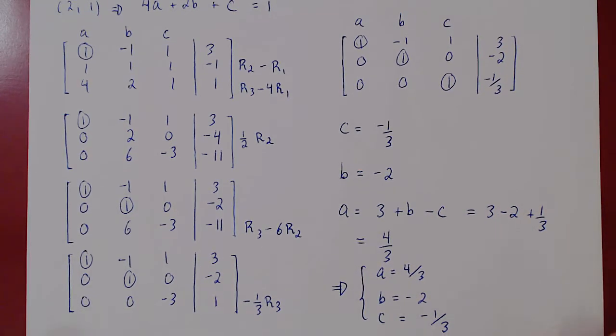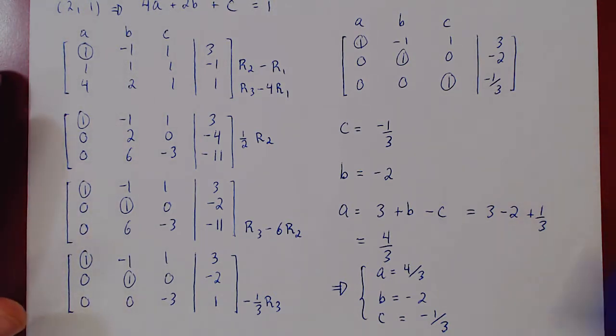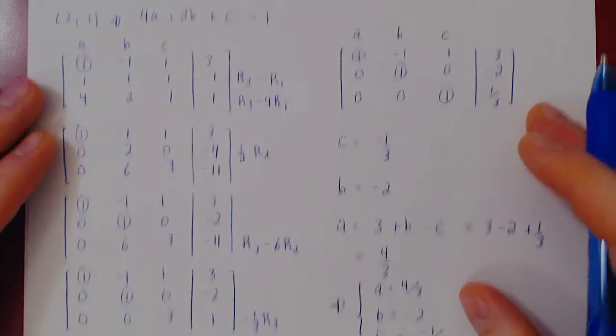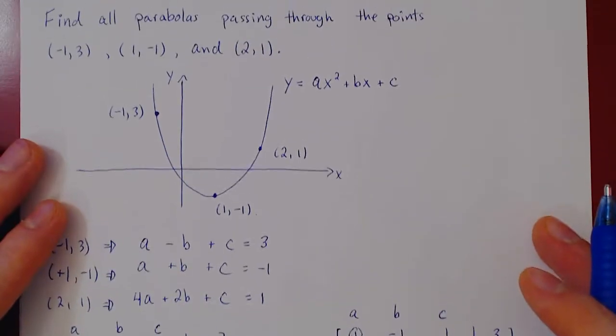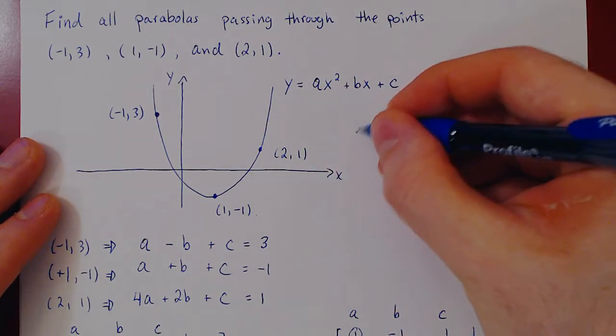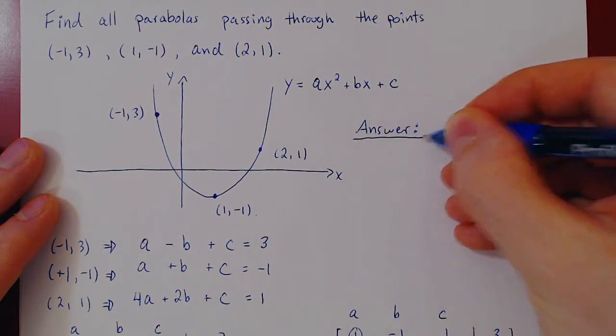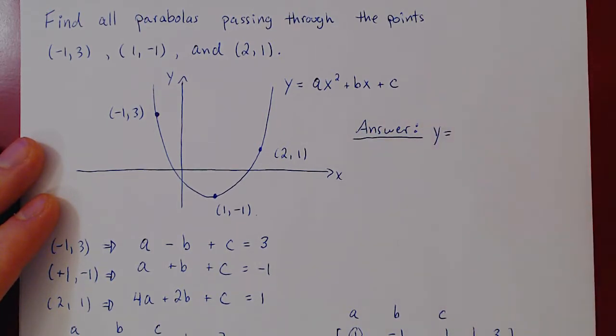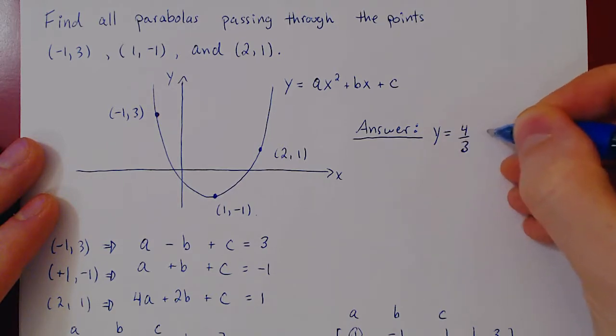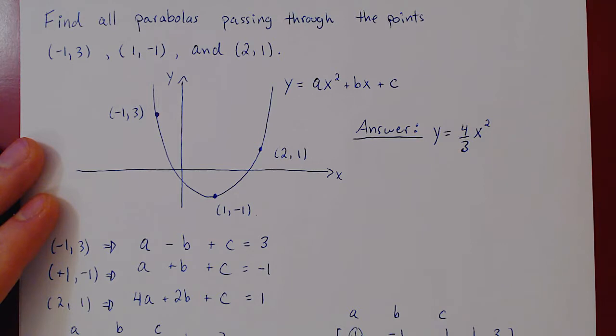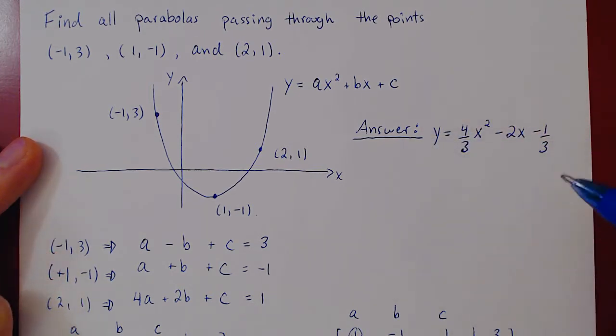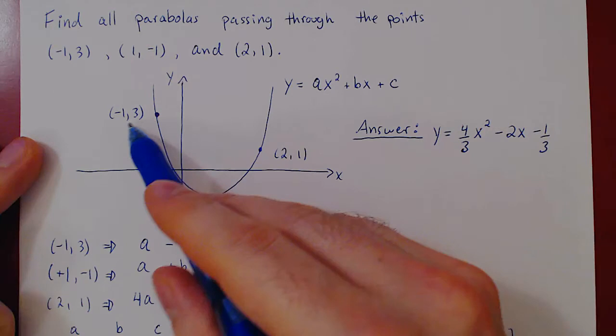But now we have to go back and answer the actual question which was finding all parabolas passing through the given three points. Well there is a unique one so we can replace and give our final answer. And the unique parabola will be y equals a which was four thirds x squared plus bx where b was negative two x plus c which was negative one third.